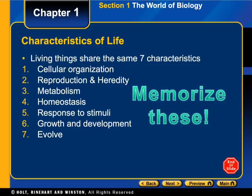The seven properties are: number one, cellular organization; reproduction and heredity; metabolism; homeostasis; response to a stimulus; growth and development — they usually combine those as one — and evolve.